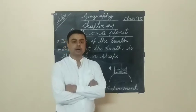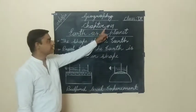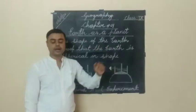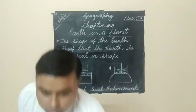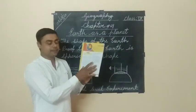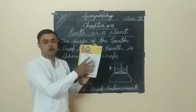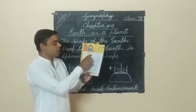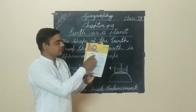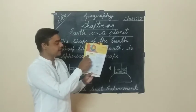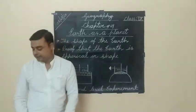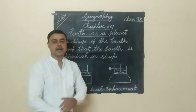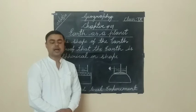In this revision, I have taken chapter number one: Earth as a Planet. Now you can see the syllabus given for the first chapter — what we are going to study. The two main topics in this chapter are: the shape of the Earth, and the Earth as a home of humankind.